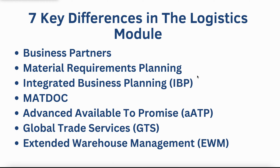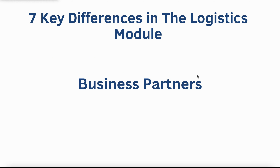Now let's take a look at the seven key differences in the Logistics module, covering Business Partners, Material Requirements Planning, Integrated Business Planning, Material Documentation Table, Advanced Available to Promise, Global Trade Services, and Extended Warehouse Management. The first key difference is the introduction of Business Partners. Within SAP ECC, customers and vendors are distinct data entities. In S4HANA, these entities are consolidated into a cohesive master data entity known as SAP Business Partners. This brings advantages such as: a single business partner can fulfill multiple roles and possess multiple addresses; general data is shared across various roles, reducing database size; and redundancy is minimized as unused data is removed after a specific time period.